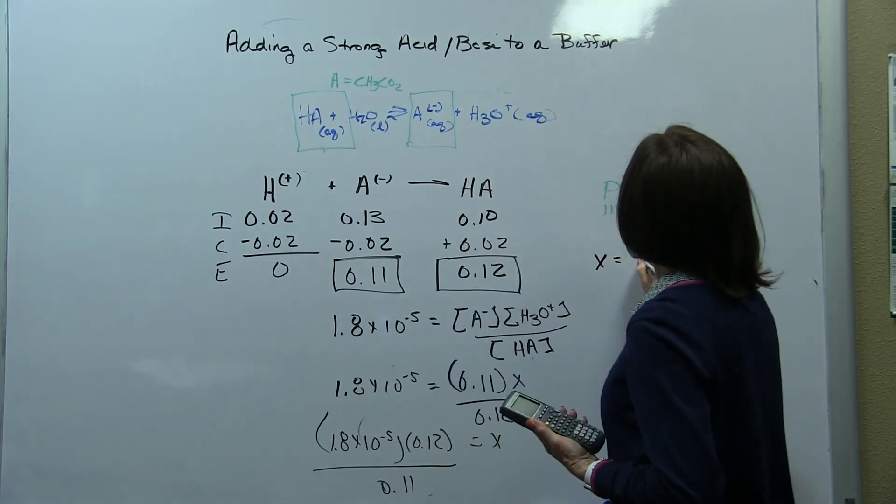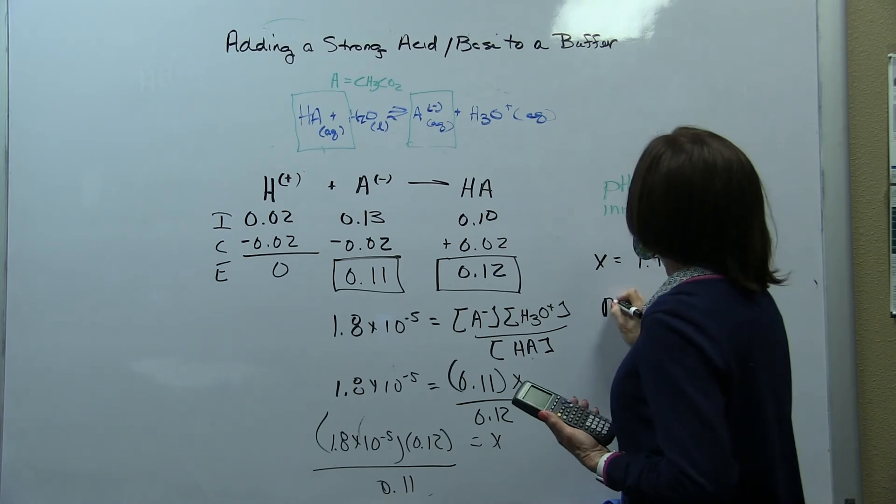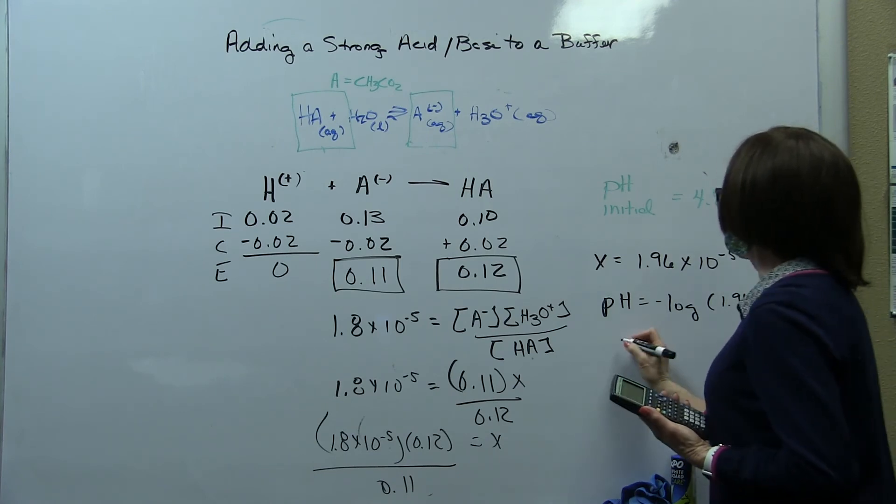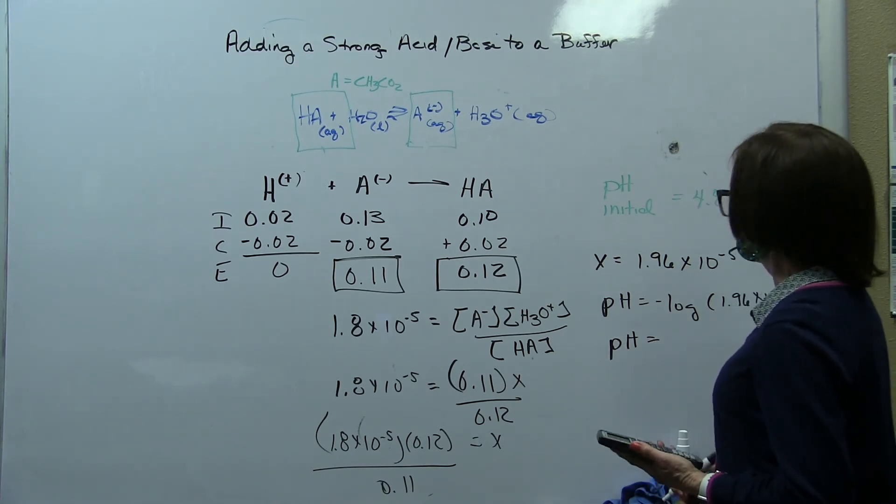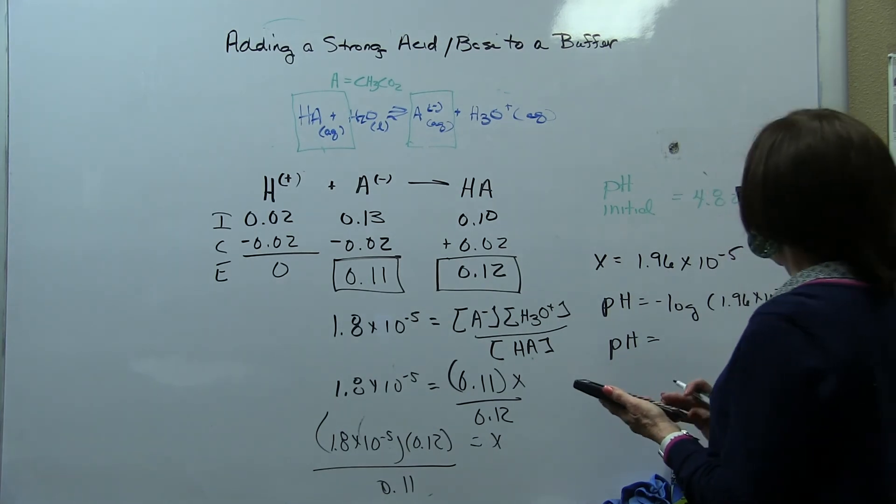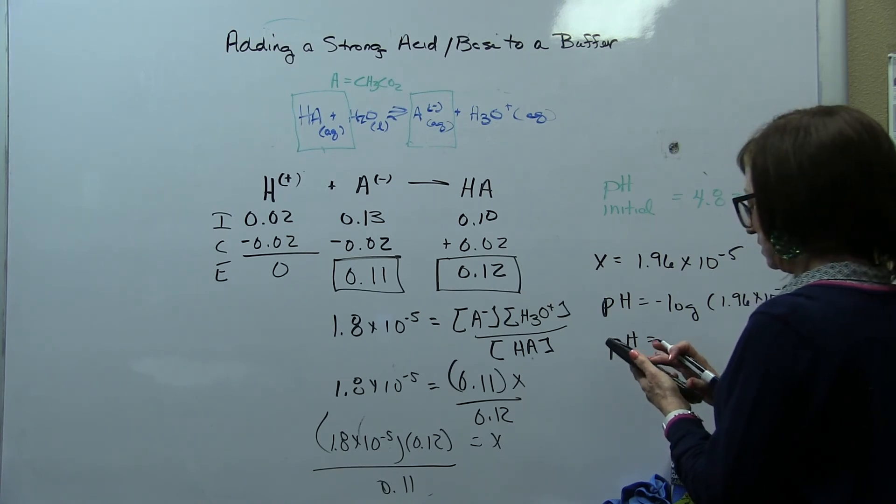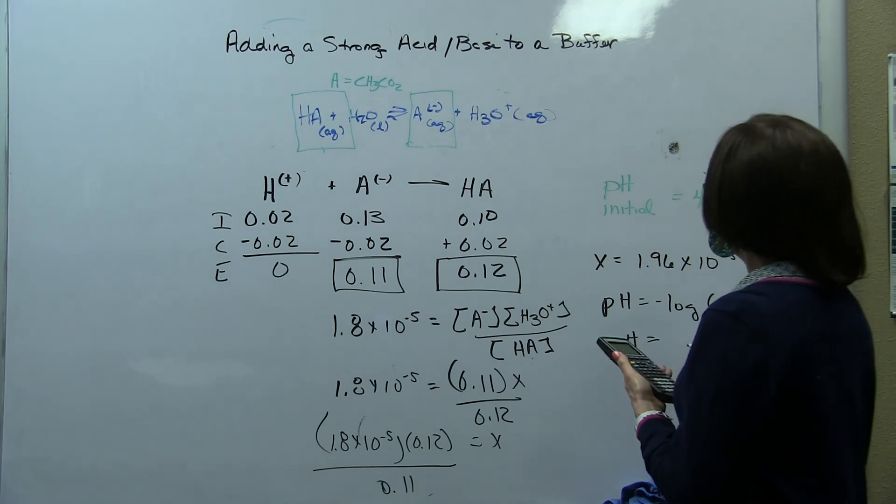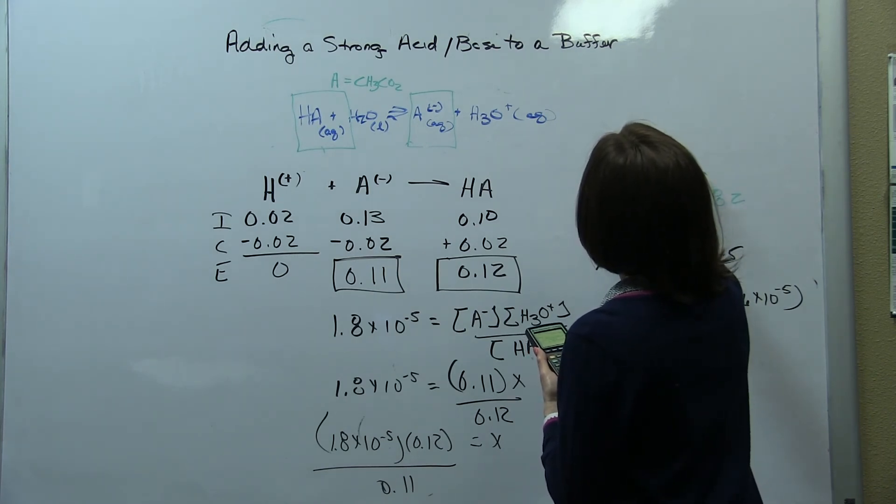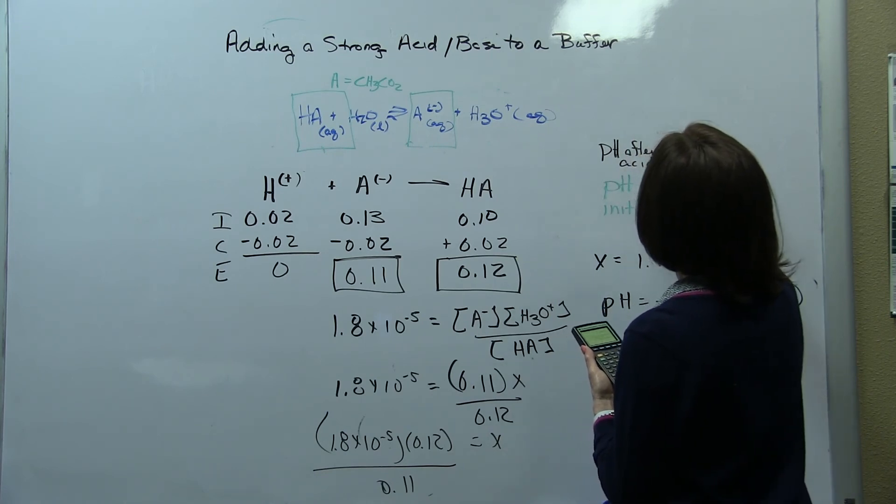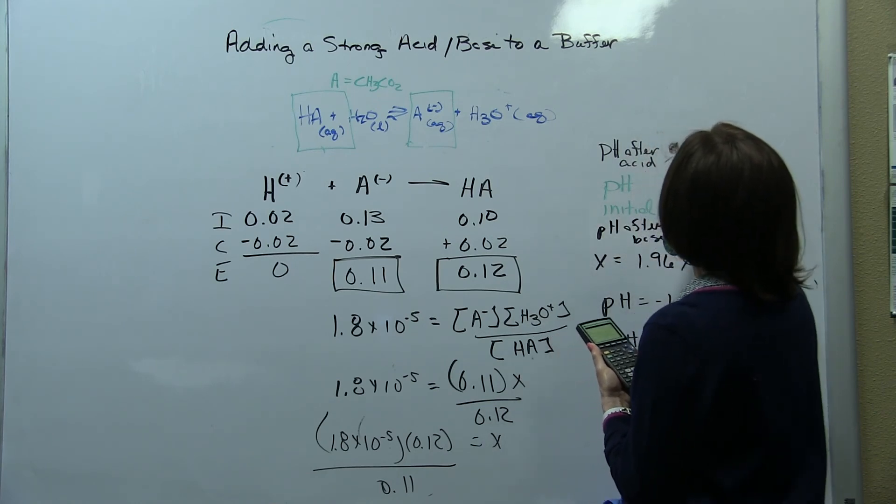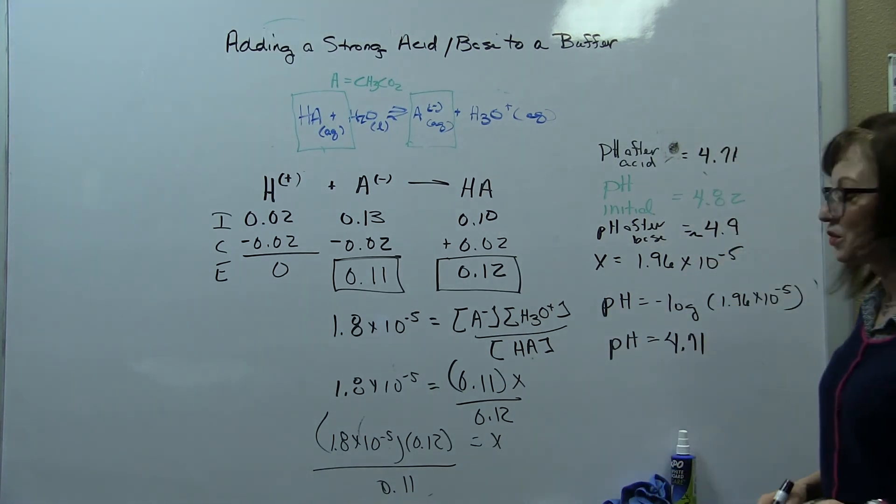I'm getting 1.96 times 10 to the negative 5 for X. So X we have is equal to 1.96 times 10 to the negative 5. So the pH here equals the negative log of 1.96 times 10 to the negative 5, which is going to, again, be somewhere around 4. It's going to be less than 4.82. I know that because that's exactly what we started with, and we added acid, so we should be less. I'm getting 4.71.